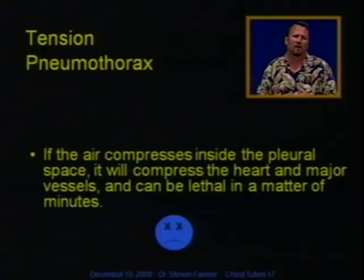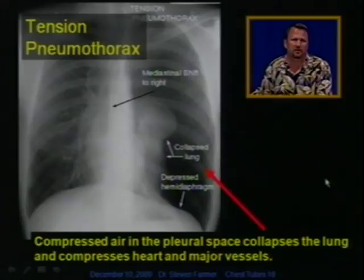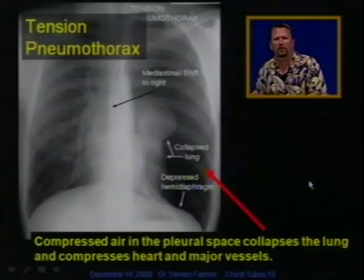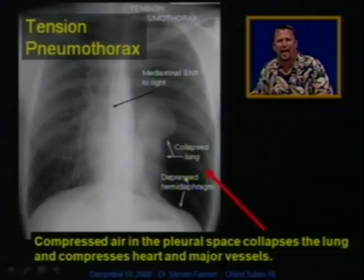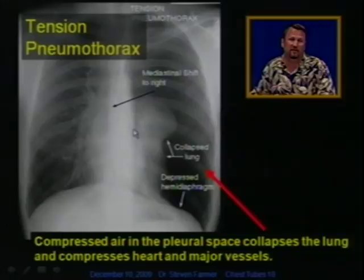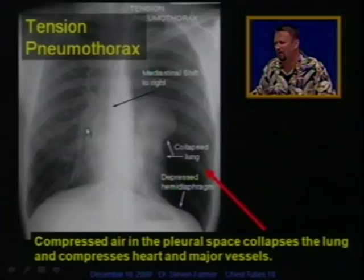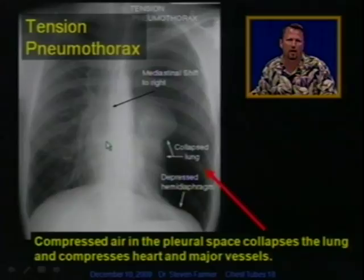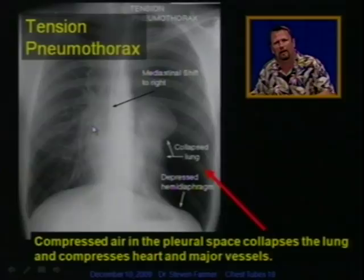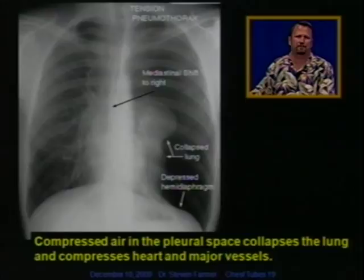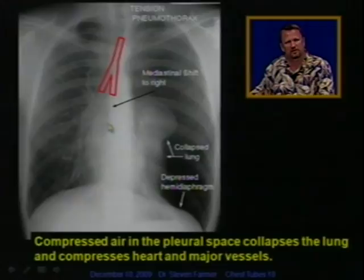This can be very lethal in a matter of minutes. Here's a chest X-ray of a tension pneumothorax, which is different than a simple pneumothorax. A tension pneumothorax means air continues to be added and compressed, shifting the heart and the mediastinum across the chest wall. Compressed air in the pleural space collapses the lung and the heart and blood vessels. This is what makes tension pneumothorax so deadly — the air compressing on the heart does not allow it to fill with blood, so the heart cannot pump.